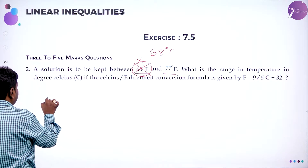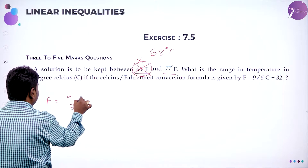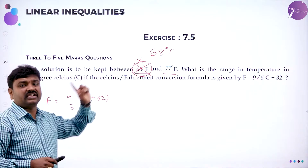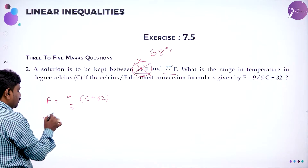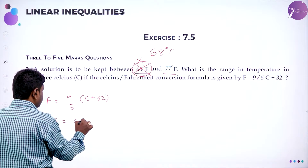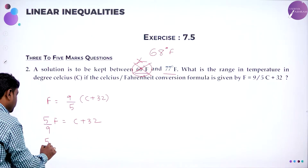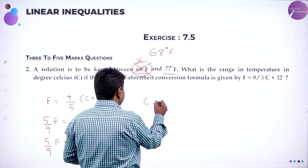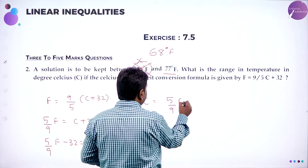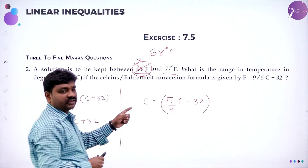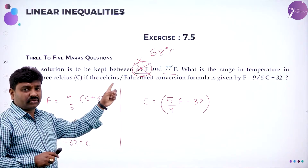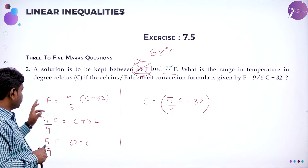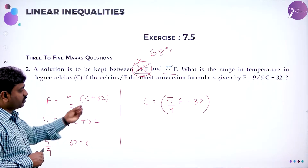Fahrenheit is given. The formula is: F = 9 by 5 times C plus 32. Now convert it to C — make the subject as C — because they want it in terms of degree Celsius. So multiply by 5: 5 by 9 into F equals C plus 32. Rearrange — bring 32 to this side: 5 by 9 F minus 32 equals C. So degree Celsius equals 5 by 9 times (Fahrenheit minus 32). This is the formula for degree Celsius.